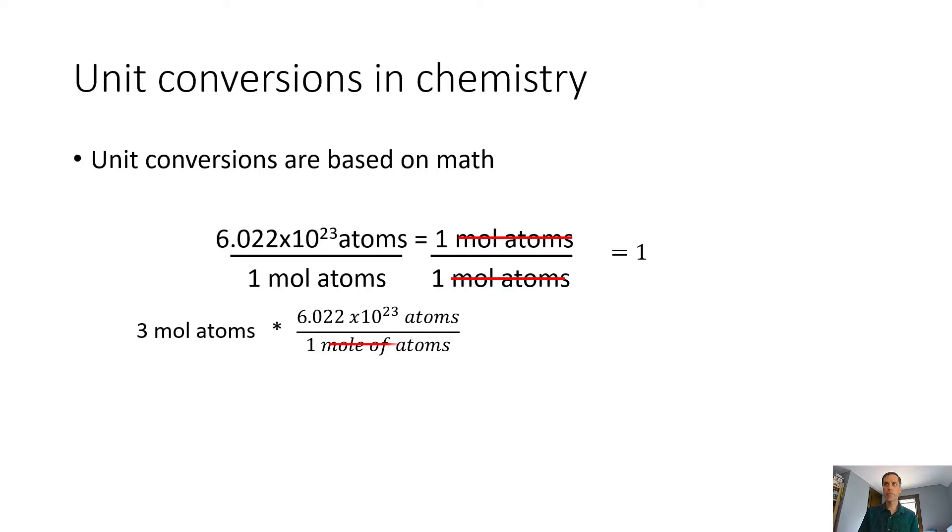We can do the math, we can see that our moles of atoms will nicely cancel out and then we can calculate that out. We now figured out that our three moles of atoms is really the same as 1.806 times 10 to the 24th atoms. It gives us a way to convert between different things in a really useful way.